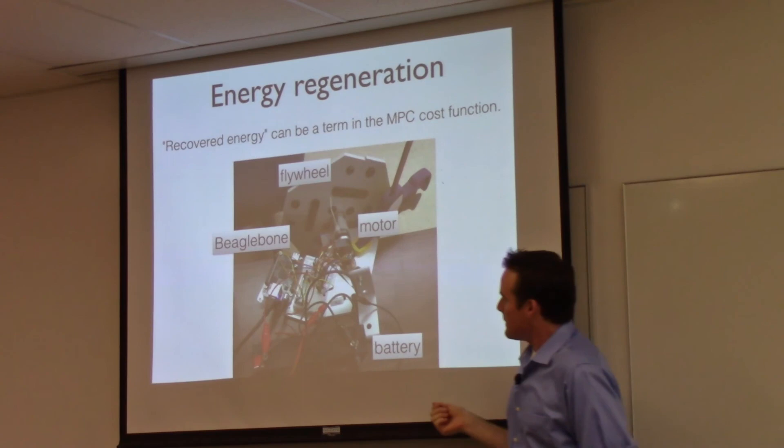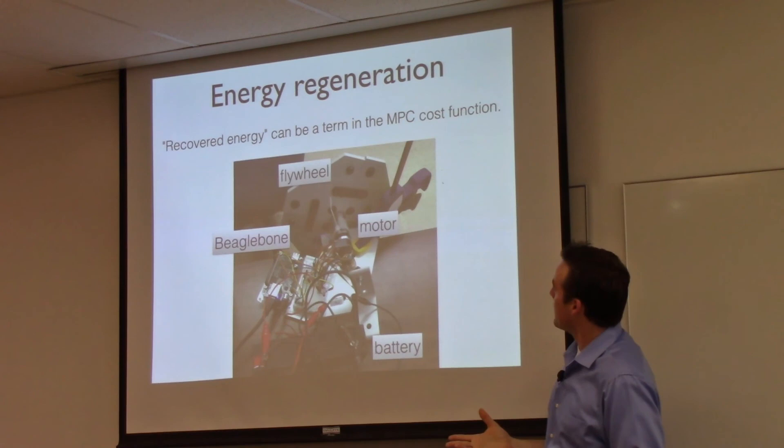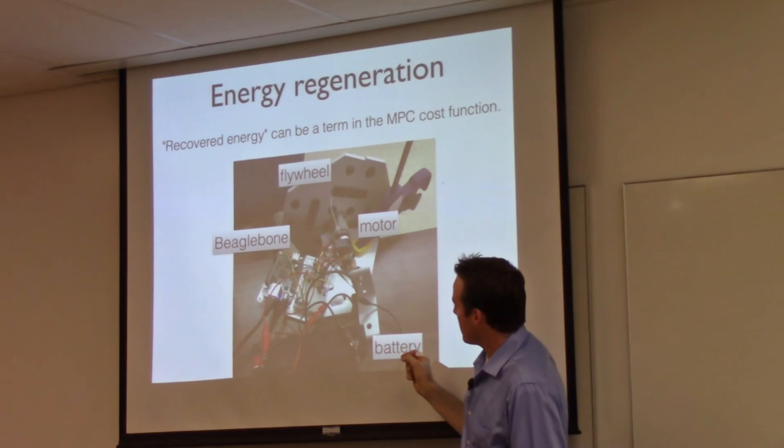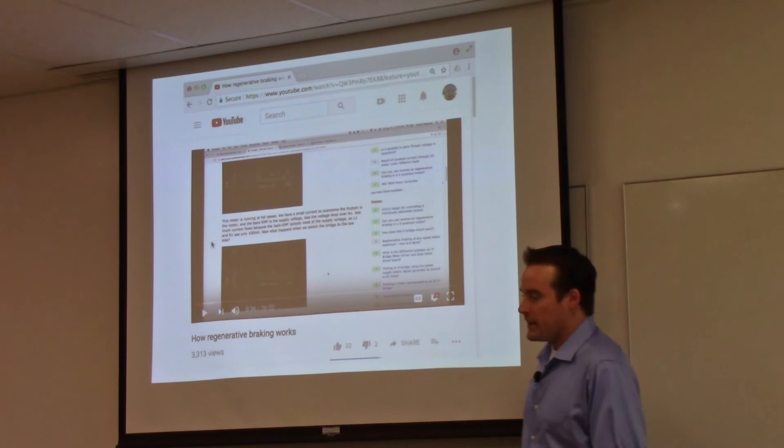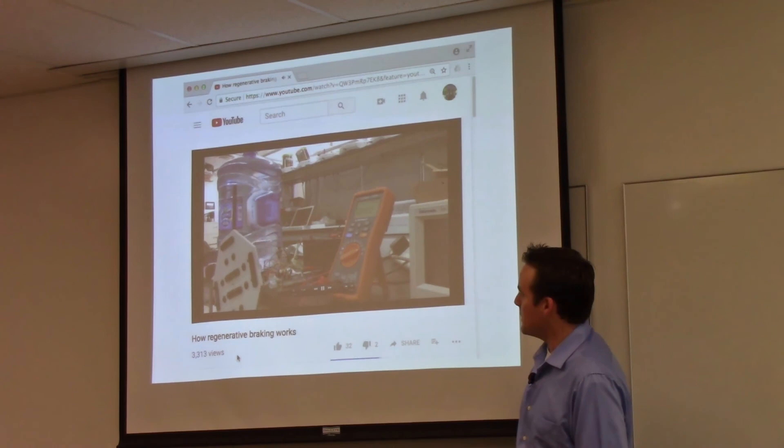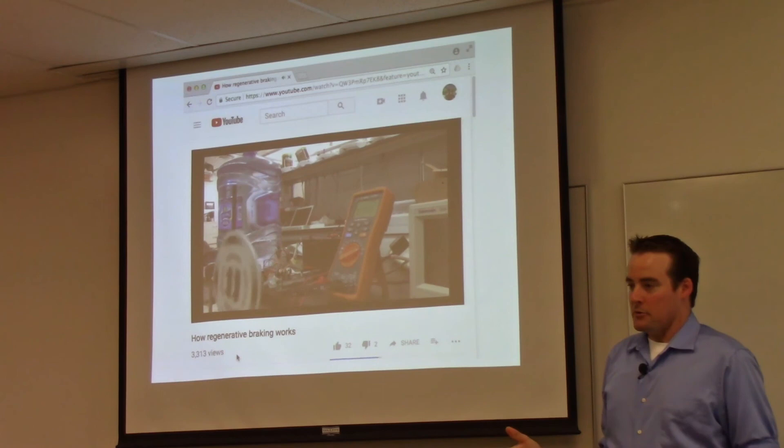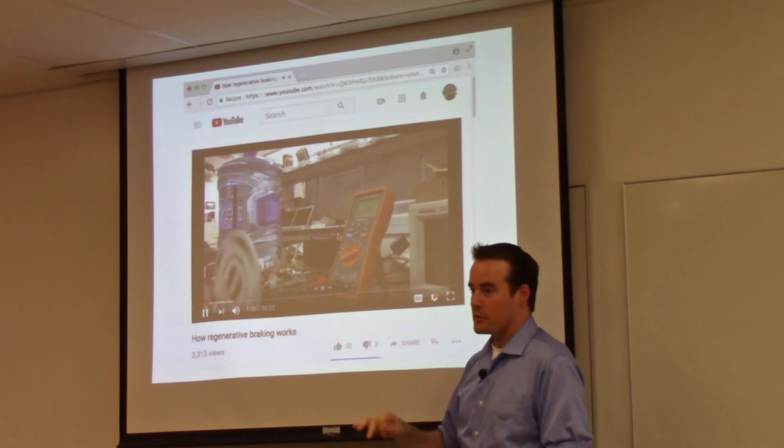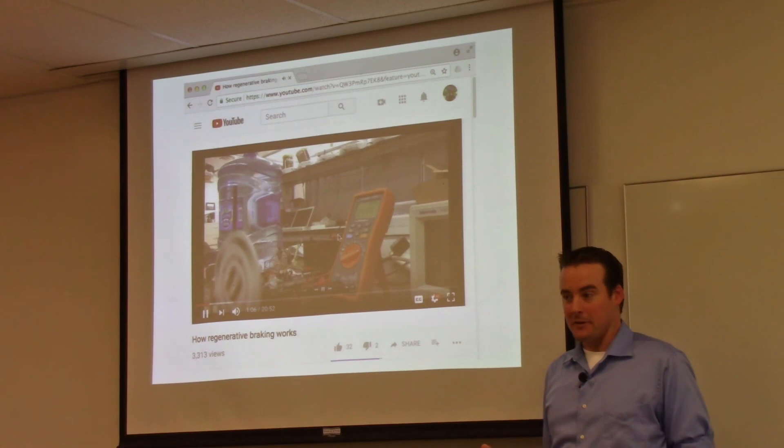One of the reasons that this would be cool is recovered energy can be a term in the MPC cost function. And so I made this janky flywheel with a motor that I borrowed from Paul Gritt and one of these beagle bones. We made a little video on YouTube describing the system and showing it in operation. Here's the little flywheel running away. The idea is to be able to run the voltages that you're commanding through the motor driver to be able to suck energy back out of the flywheel. And it would be so cool to do that with model predictive control.